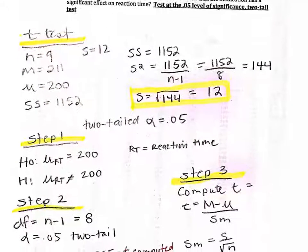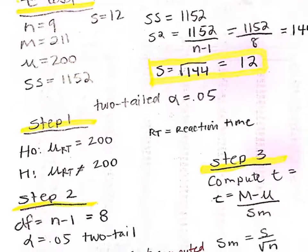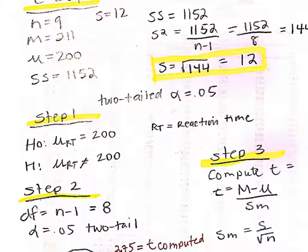Step 1 is our null and alternative hypothesis. We have that the null hypothesis is: μ_RT equals 200. Then for the alternative hypothesis, we have: μ_RT does not equal 200.